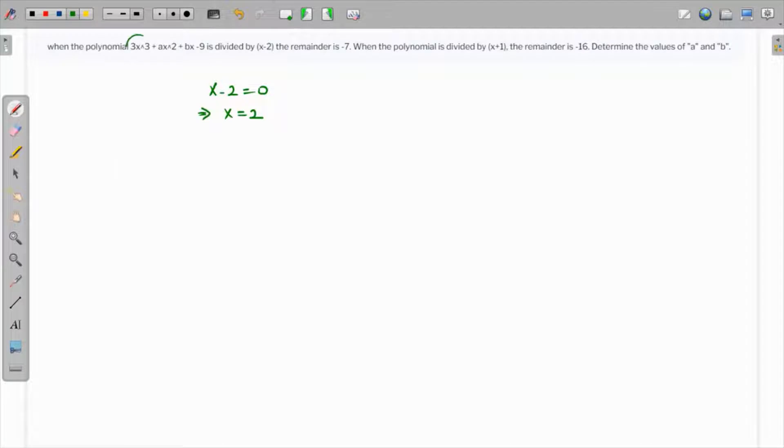If this polynomial is written as f(x) = 3x³ + ax² + bx - 9, then all we have to do is find the value of f(2). Whatever value we get is actually the remainder—that's the property.